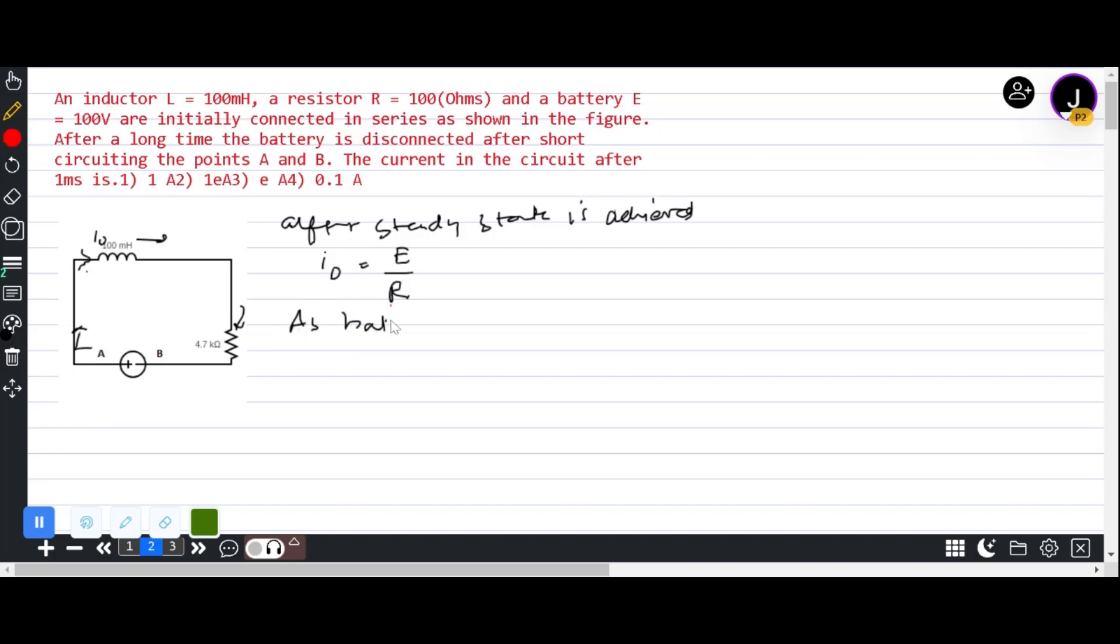At T equals 0, the battery is removed and A and B are short-circuited. When the battery is removed and short circuit happens between A and B, we have current I equals E by R.